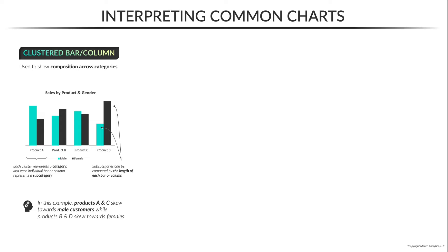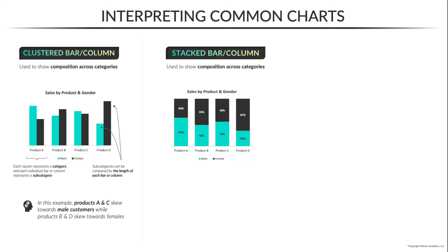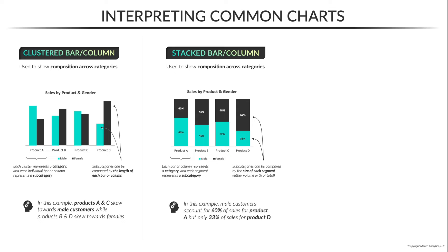We can actually tell that same story with the same data in a slightly different way using a stacked bar or column, which is also designed to show composition across categories. The only difference is that instead of clustering columns side by side, now we're stacking them on top of each other. You can either stack them based on their actual volume, or you can show them as percentages of the total — which is what you see here, known as a 100% stacked column chart. The takeaway, just like our first example, is that male customers account for 60% of sales for product A, but only 33% of sales for product D.